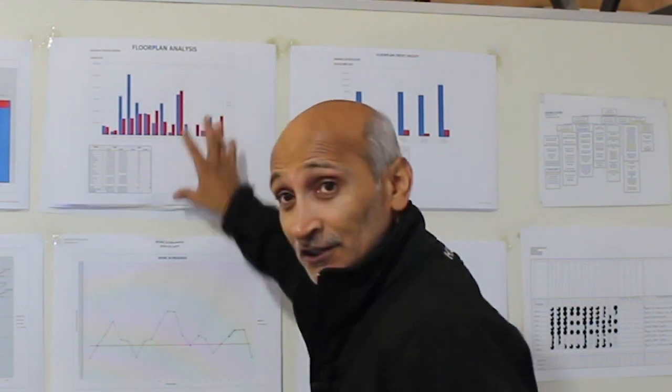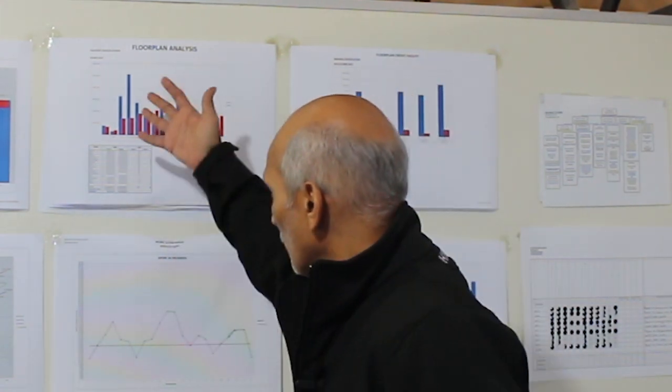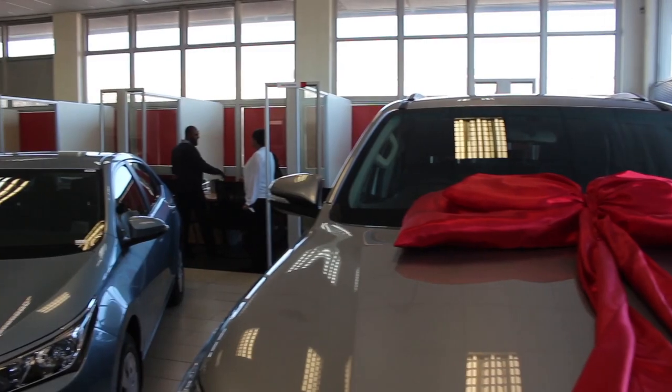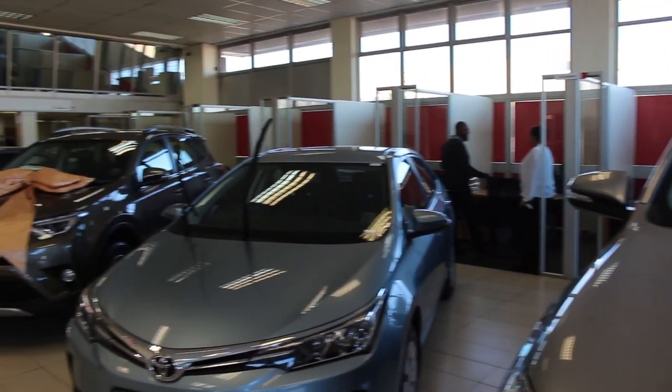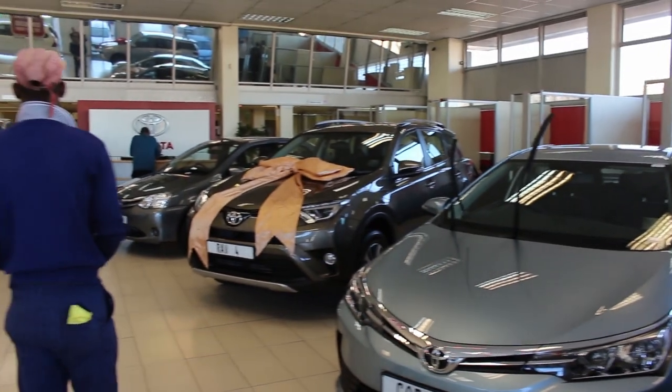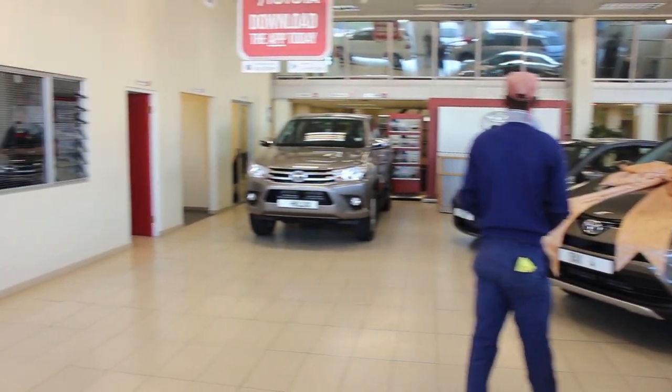So what we've got is in this particular business, we've got a floor plan facility which will tell me what cars are on my floor plan. Technically I don't own these cars, they belong to the factory, to Toyota South Africa. So when I sell a car, I need to pay for that car and then I need to get my money back.